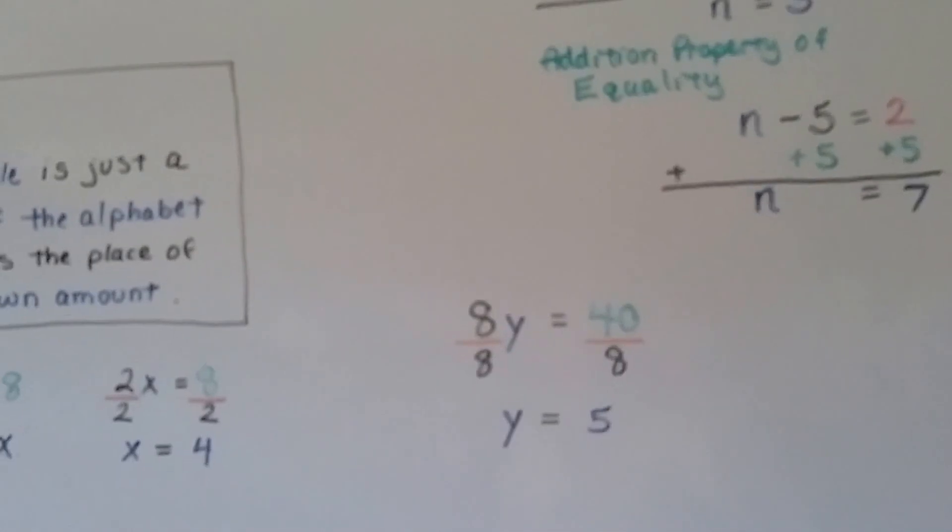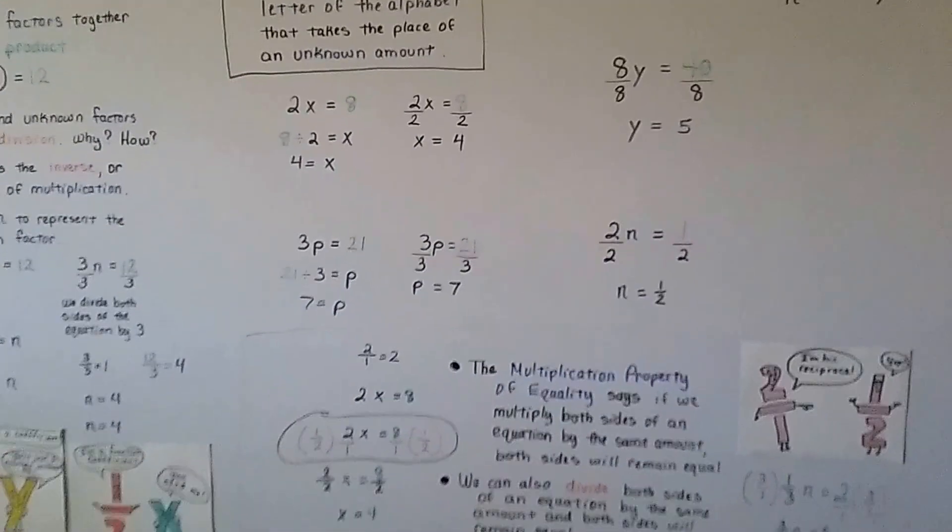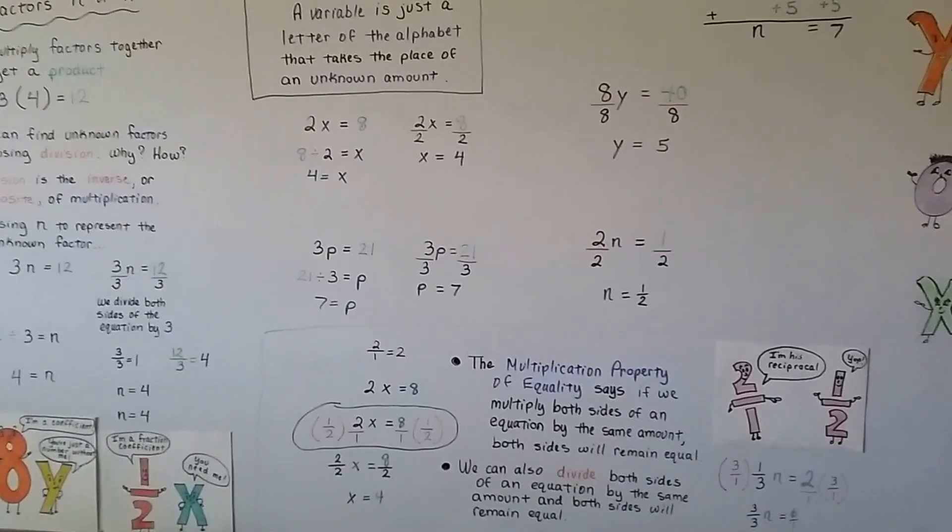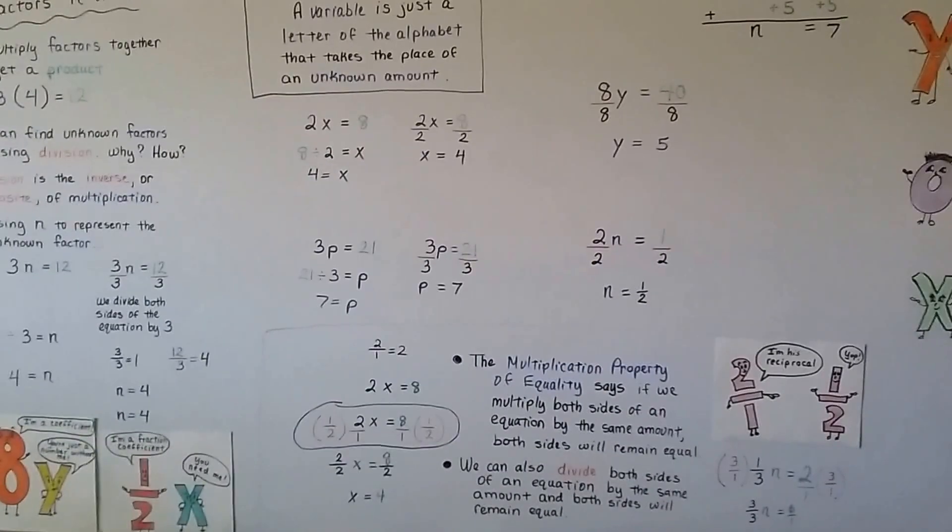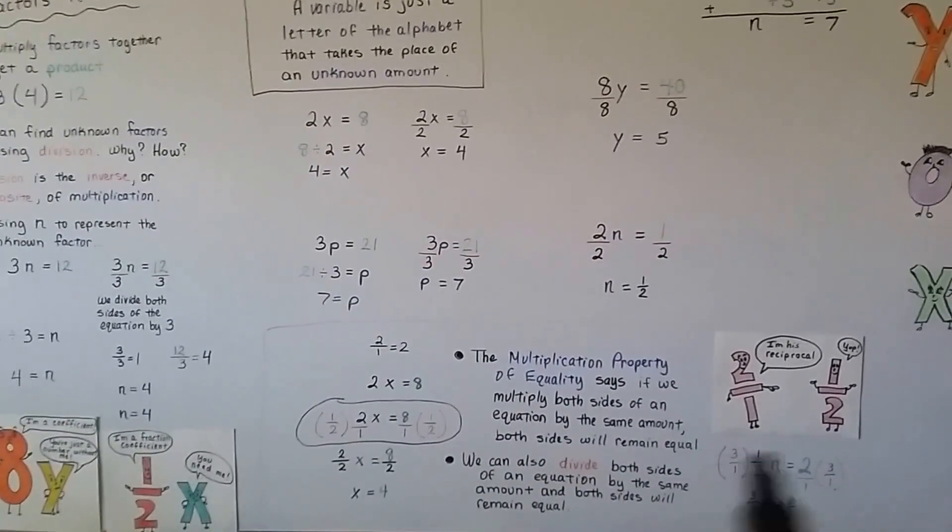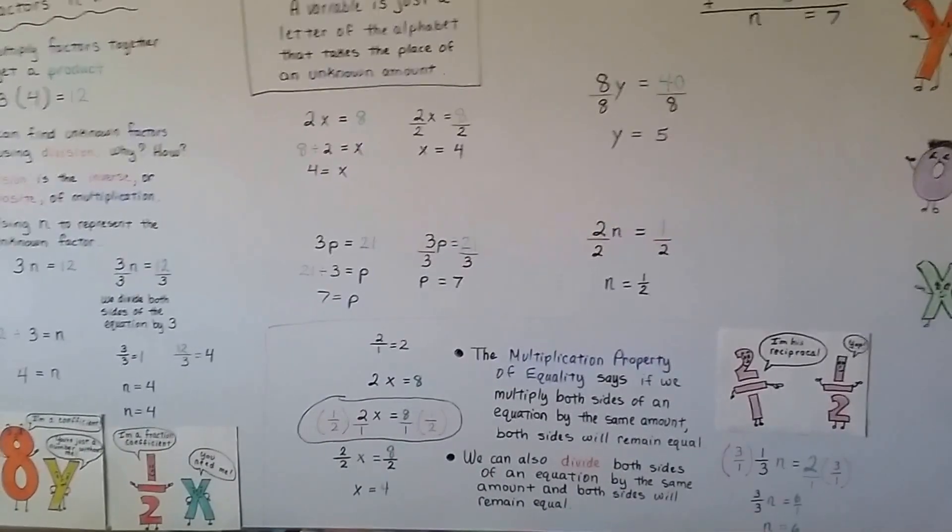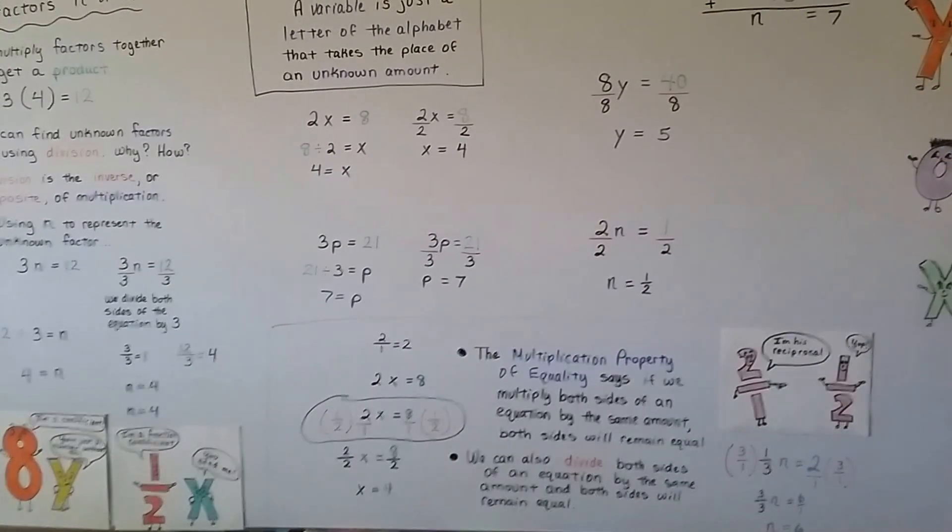Very similar. So, we can find unknown factors, letters of the alphabet, that are in an equation or a word problem by using the multiplication property of equality by either multiplying with reciprocals on each side of the equation or just dividing. If there's whole numbers, dividing each side of the equation by that coefficient, that number, in front of the variable.